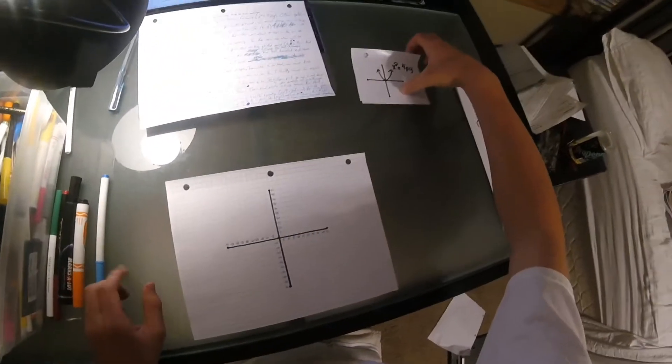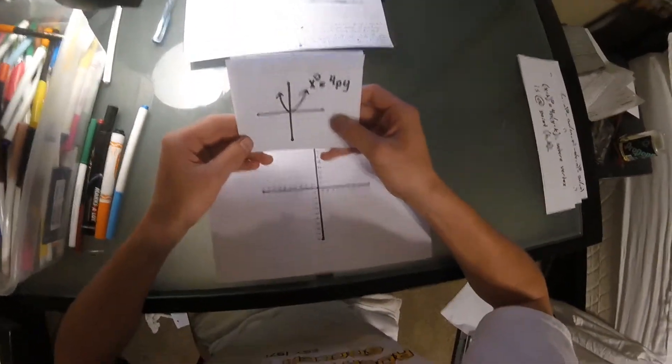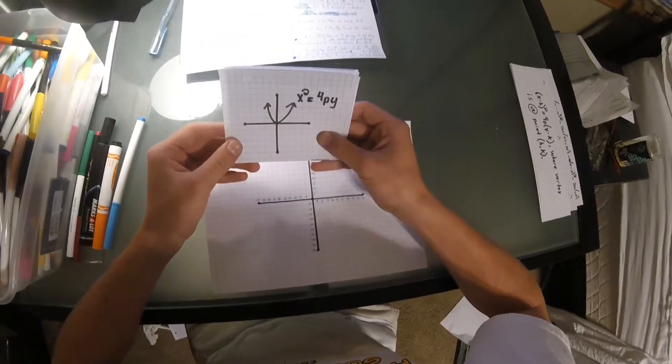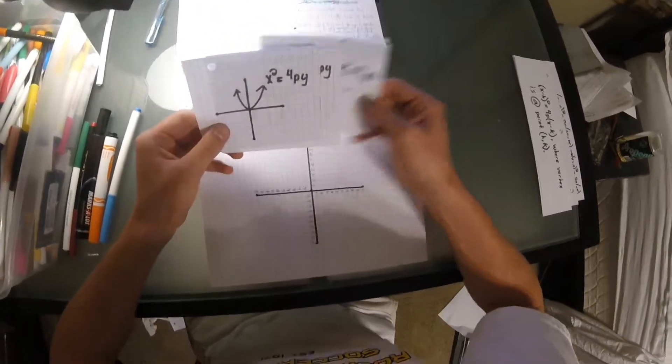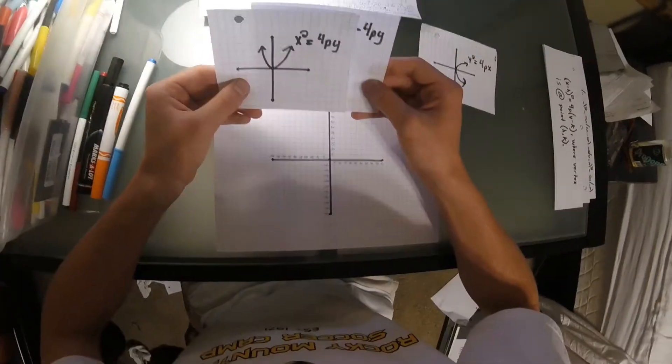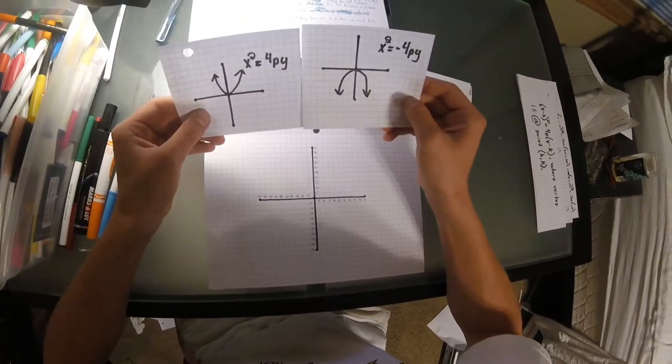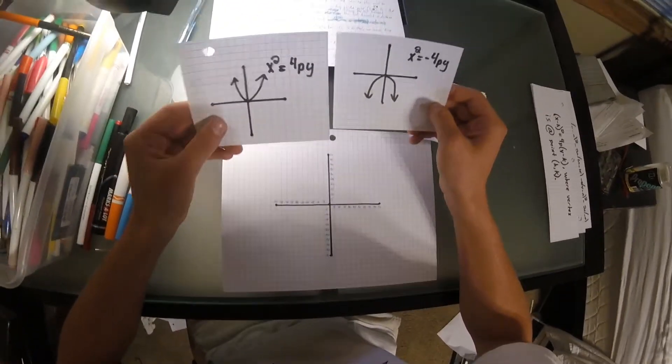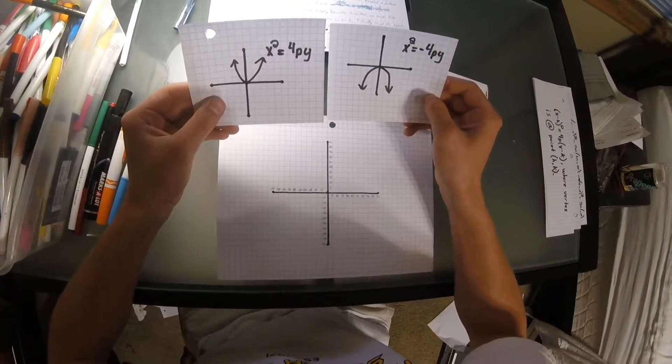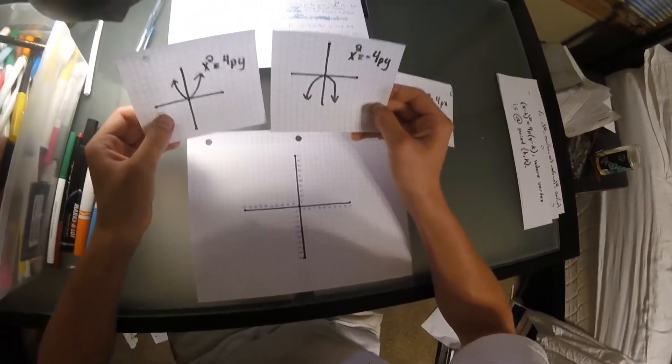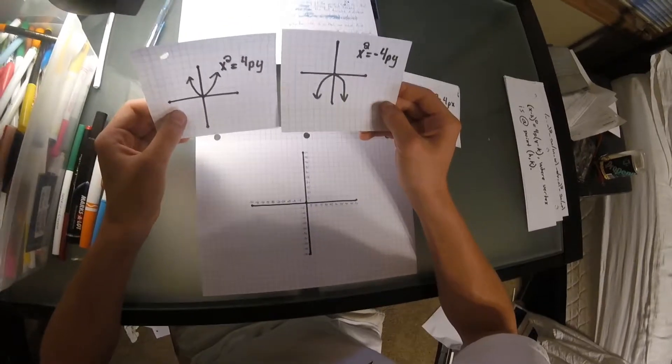Now, the basic formula for a parabola is x squared equals 4py. When there's an x value being squared, the parabola will open either upwards or downwards, and that depends on the p value, if it's positive or negative. On this one we see that the p value is positive, so it opens up. On this one the p value is negative, so it opens downwards.